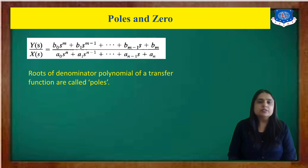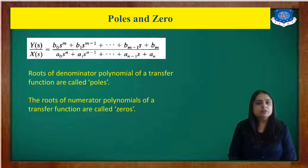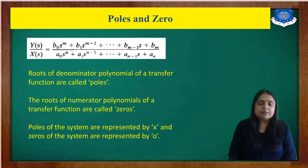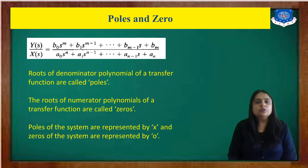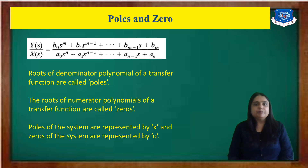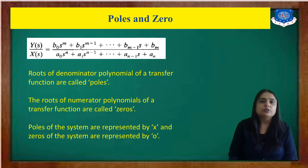For the zeros, we set the numerator equal to zero. The roots of the numerator polynomial of the transfer function are known as zeros. Poles are represented by a small 'x' and zeros by a small 'o' (circle) when plotted on the s-plane. You know this well from studying root locus in Control Systems.